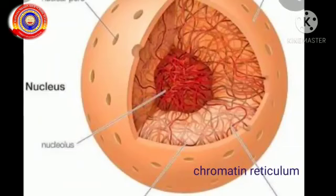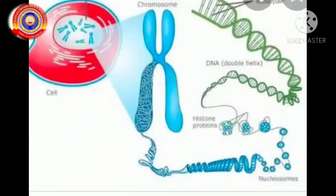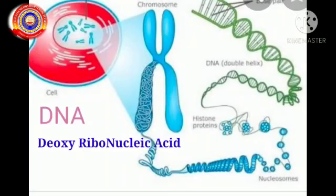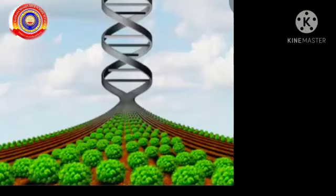This chromatin reticulum changes to chromosomes, which show hereditary characters. That means genes are seen in the chromosome, and these genes contain DNA, which is called deoxyribonucleic acid, which is double-stranded.